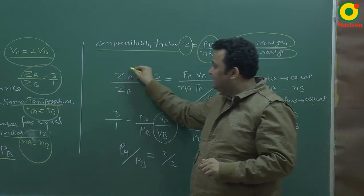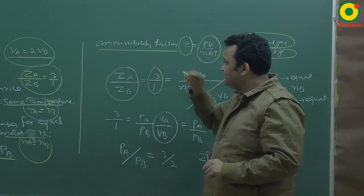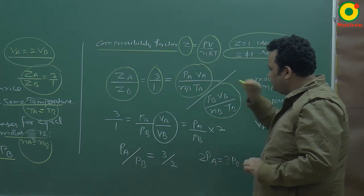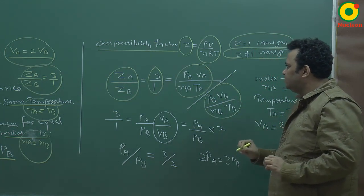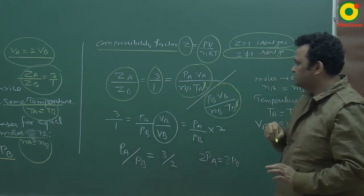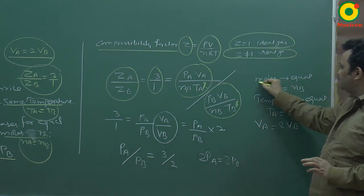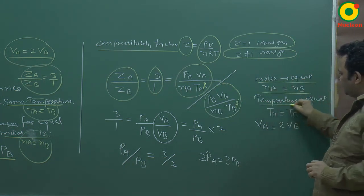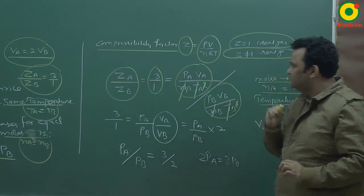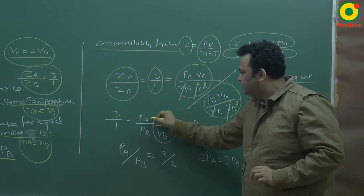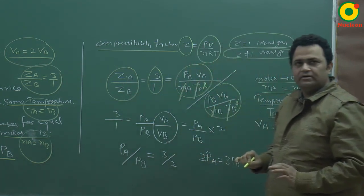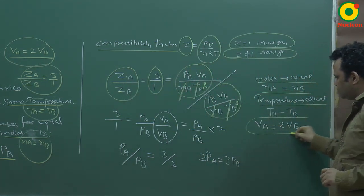Now the question is saying that Z compressibility factor is equal to 3 is to 1. What can I write this? PAVA upon nATA and this is PBVB upon nBTB is equal to compressibility factor 3 is to 1. I have already cancelled R since R was constant. Now the question is saying that moles are equal, so nA is equal to nB. Temperature equal? So TA is equal to TB.